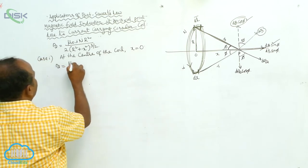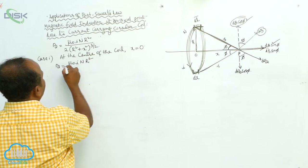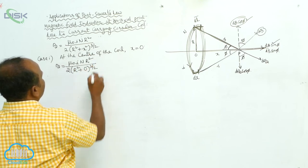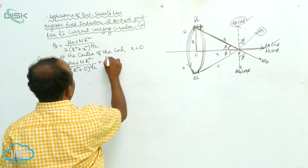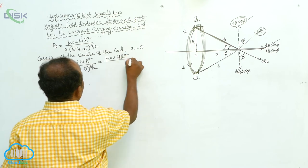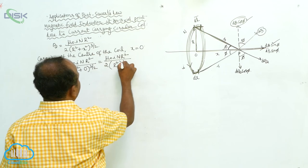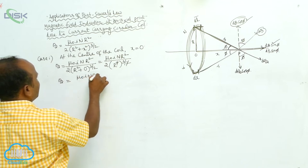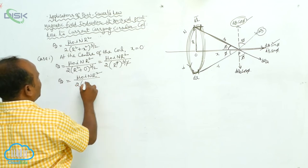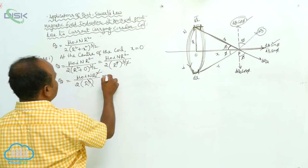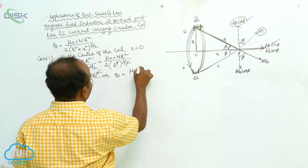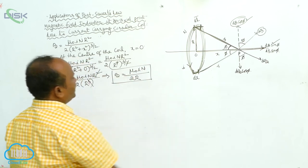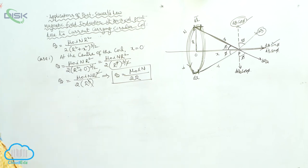Therefore, B = μ₀inr² / [2(r² + 0²)^(3/2)] = μ₀inr² / (2 · r³). Here r² and r³ cancel, giving B = μ₀in / (2r). Therefore, at the center of the coil, the magnetic field induction is represented by B = μ₀in / 2r.